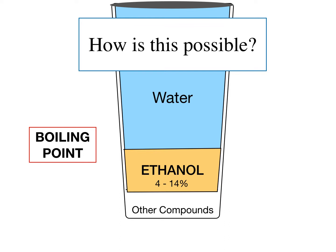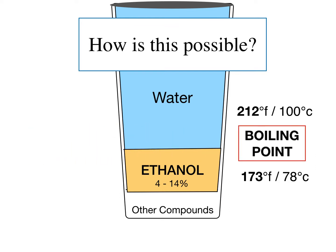The boiling point for water is 212 degrees Fahrenheit or 100 degrees Celsius. Water will start to evaporate at room temperature, but how much and how fast increases as it gets warmer. Ethanol will evaporate or vaporize at 173 Fahrenheit or 78 Celsius — you should know these numbers for testing purposes. Because ethanol has a lower boiling point, it will come off the heated solution before the water, and that allows us to separate it.